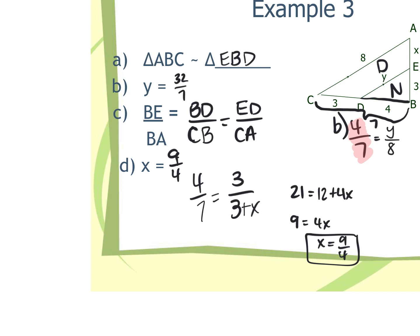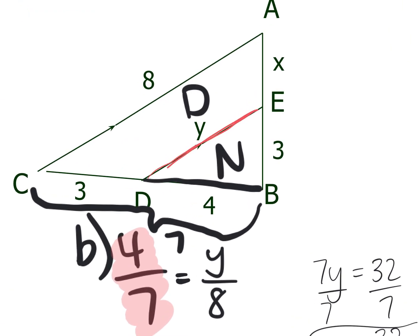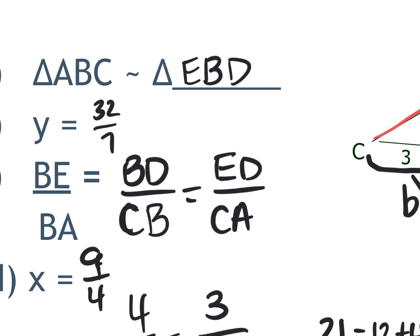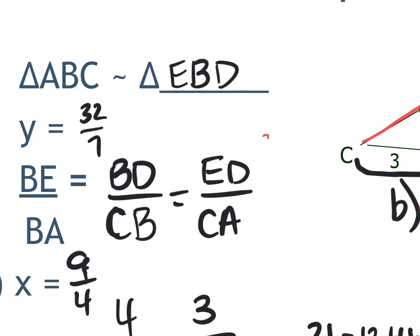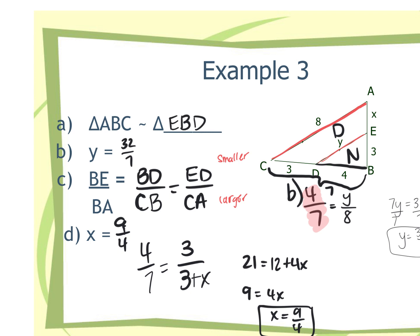Questions — does it make sense? Blair — isn't C supposed to be ED over CA? No, that one's right. ED is that last side from the smaller triangle over the larger triangle — those are the corresponding sides. The order does not matter for those. Any other questions, guys?